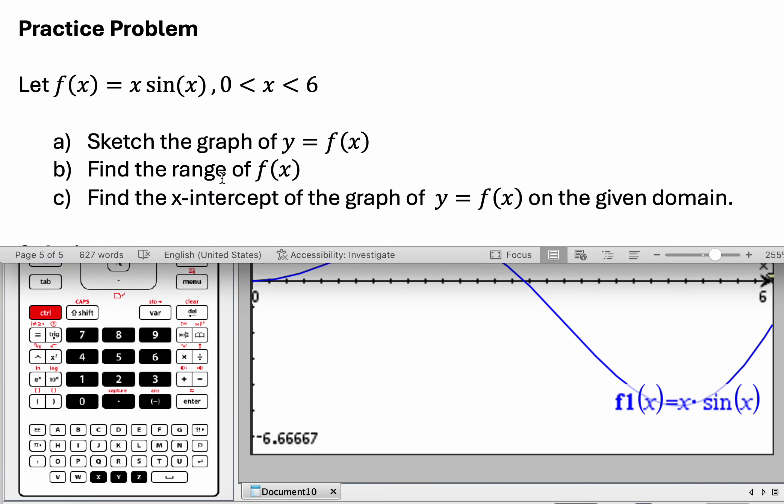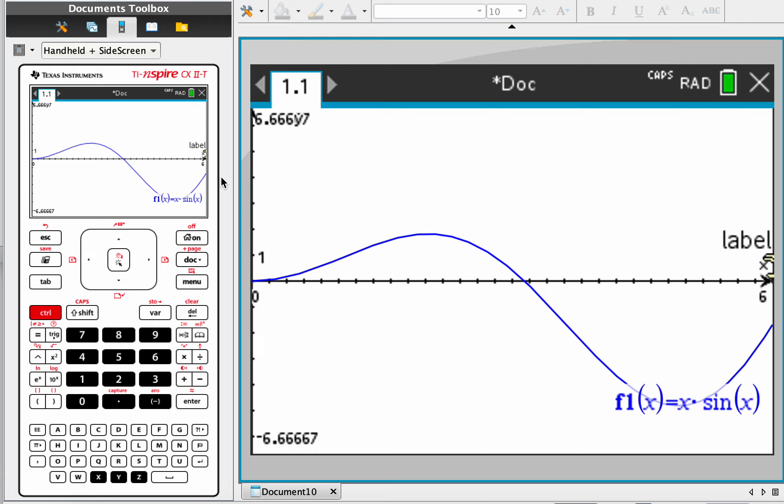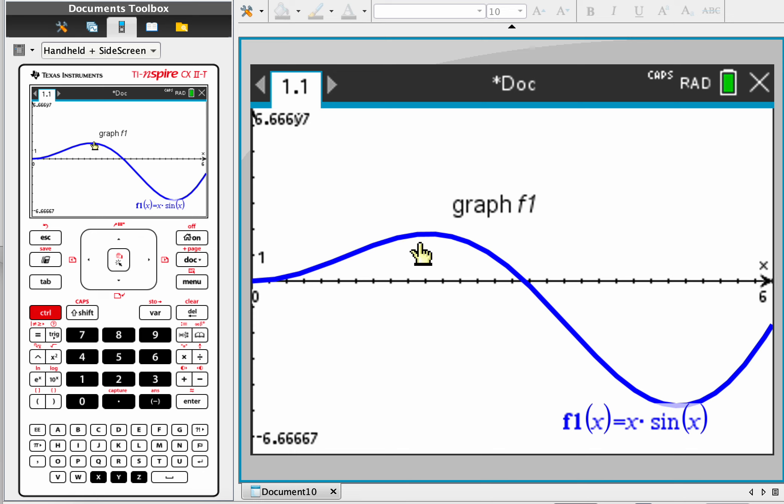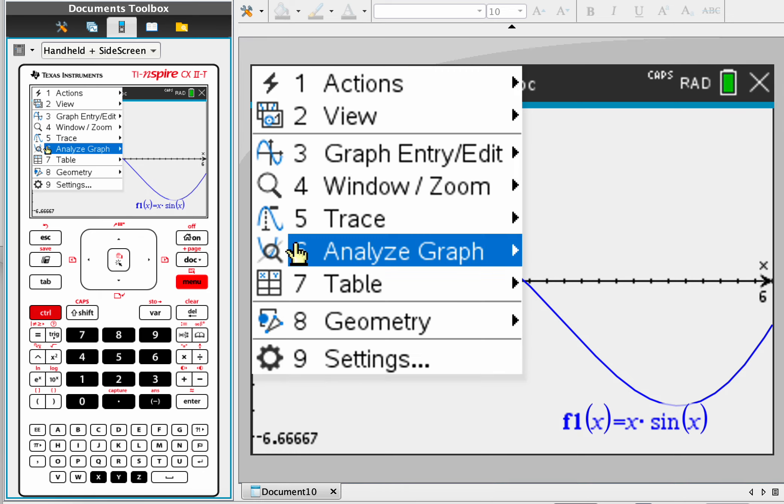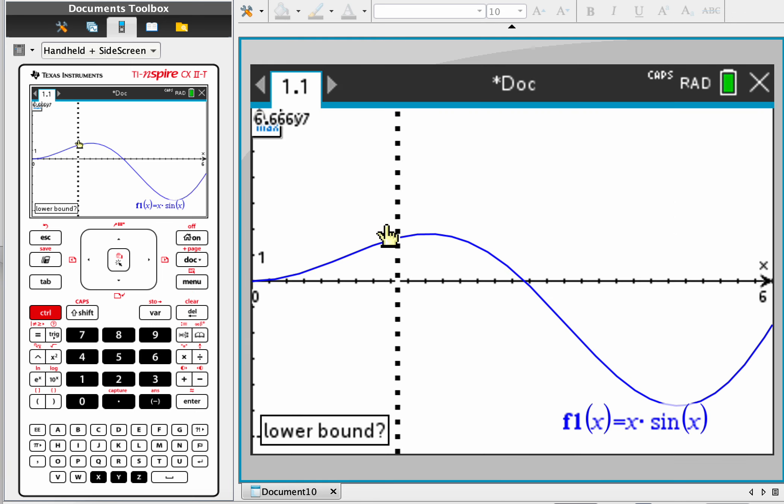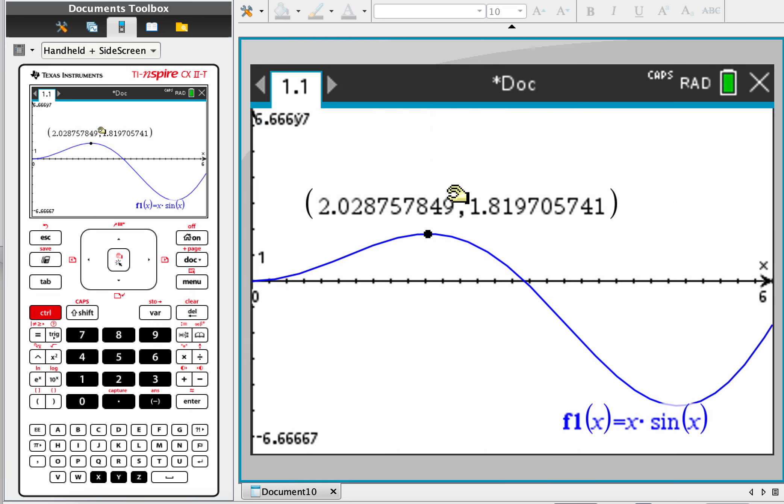Okay, so it says find the range of f of x, because the range means like the possible y values. So in other words, we need to find the minimum value here, the maximum, and the range would be what corresponds with the y value. So let's go to analyze graph maximum from here to here. Okay, so the y value is 1.82 approximately.